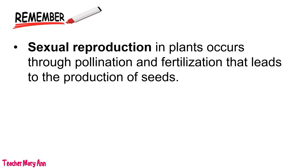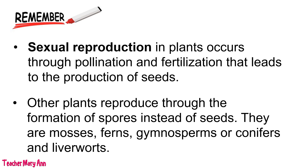Sexual reproduction in plants occurs through pollination and fertilization, which leads to the production of seeds. Other plants reproduce through the formation of spores instead of seeds. These include mosses, ferns, gymnosperms or conifers, and liverworts.